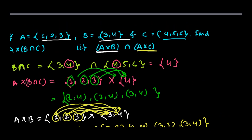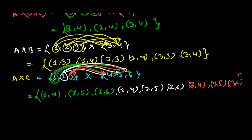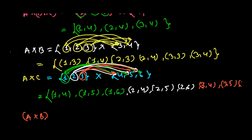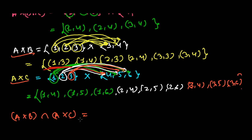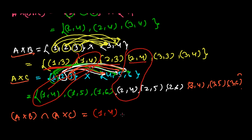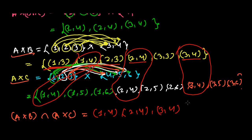Now the question asks us to find (A cross B) intersection (A cross C) — those elements which are common in both sets. Checking: (1,3) is nowhere in A cross C; (1,4) appears in both, so we have (1,4). Checking (2,3) — not found; (2,4) — yes, present in both, so we have (2,4). Checking (3,3) — not found; (3,4) — yes, present in both, so we have (3,4). That is our solution for the second question.